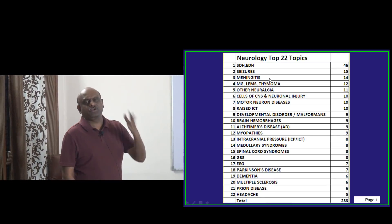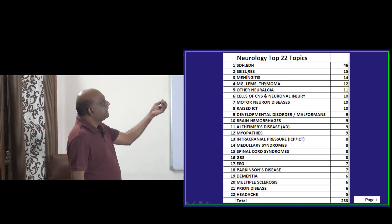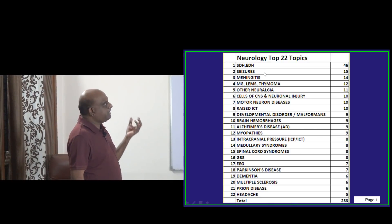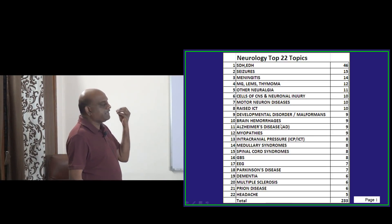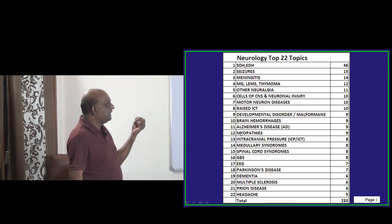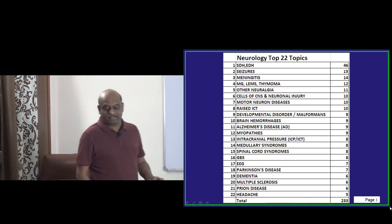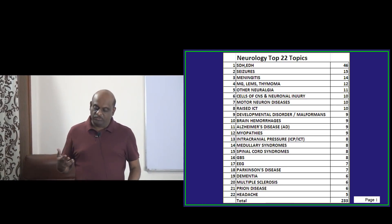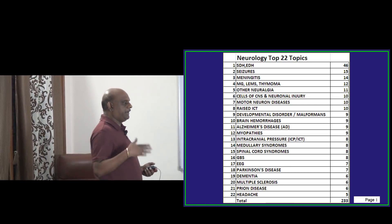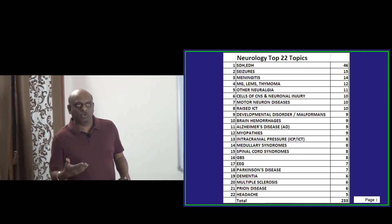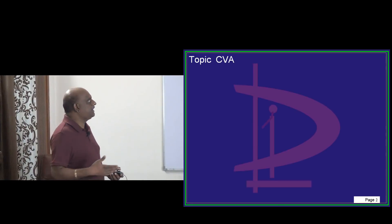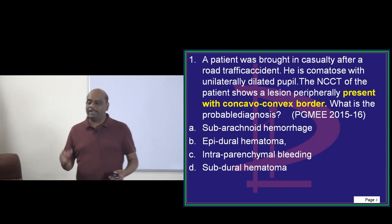Stroke has the highest number of questions asked in the last 15 years. Then seizures, meningitis, myasthenia gravis, neuralgias, motor neurone diseases, raised intracranial tension, developmental malformations, brain hemorrhages, algesias, myopathies, and more. I will try to quickly run through these previous NEET PG and All India exam-based question bank topics, starting with cerebrovascular accident.